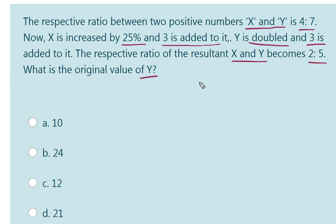So how could we find the original value of Y? X is to Y has been given as 4 is to 7. So we should find the original value of Y. The original value of Y must be a multiple of 7.